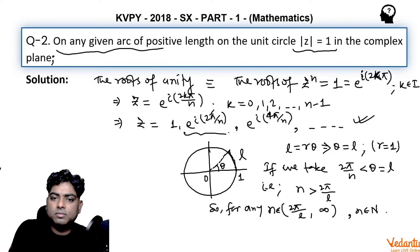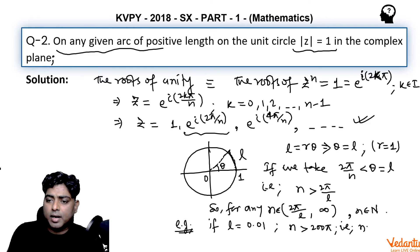For any n there will be a root which will lie on that particular arc taken. For any n belonging to the interval 2 pi by l to infinity, where n is an integer, a natural number, the root of unity will fall on this arc. For example, if l is very small, suppose I am taking it as 0.01, and if I take n to be more than 200 pi, that is n greater than or equal to 629, 629 to infinity.